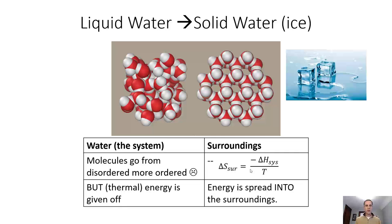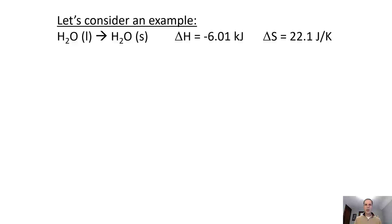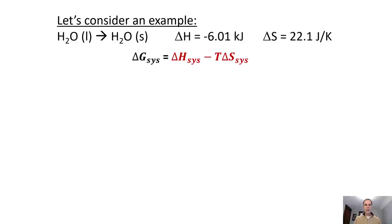So we have something that seems favorable and something that seems not so favorable in terms of whether or not this is likely to happen. Here we've got our equation showing liquid water going to solid, and we know the delta H and delta S for those. We can look at our delta G of the system: it's equal to the delta H of the system minus T times the delta S of the system — everything in terms of the system.